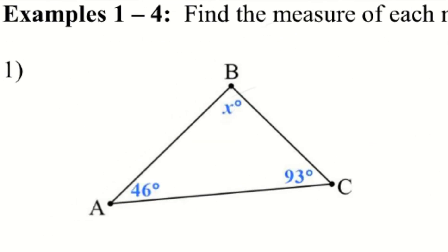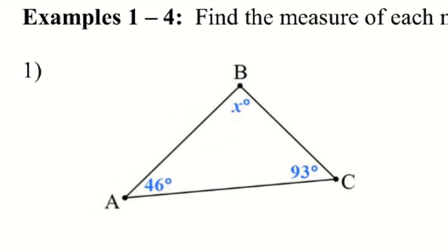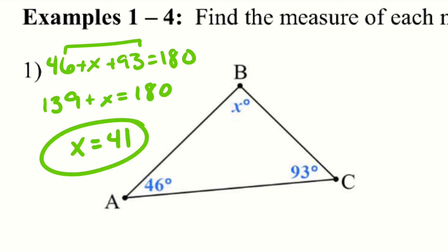Alright, let's go ahead and take a look at example 1. So we have these three angles. I don't know what x is, but I do know that if I add all three of those together, I should get 180 degrees. So 46 plus x plus 93 should give me 180 degrees. I'm going to go ahead and subtract my 46 and 93 from both sides. Let's go ahead and add them together first. So 139 plus x equals 180. Then if I subtract 139 from both sides, I get x equals 41. So I know that x is 41.